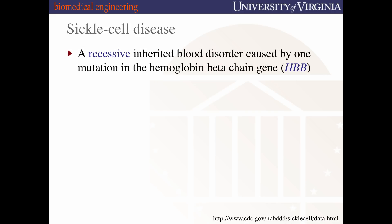What is sickle cell disease? It's a recessive inherited blood disorder caused by a single amino acid substitution in the hemoglobin beta chain gene. A recessive inherited disorder requires that you inherit the mutation from both your mother and your father — only then will you get the disease. A dominant inherited disorder only requires one mutated gene to get the disease. Recessive versus dominant.